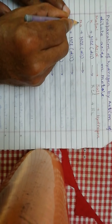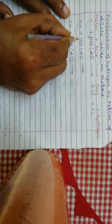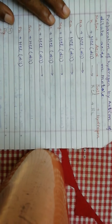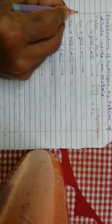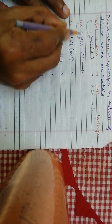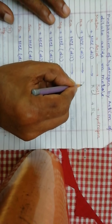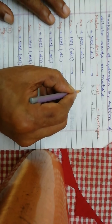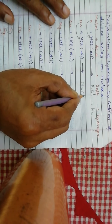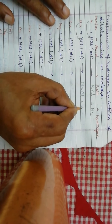When sodium reacts with hydrochloric acid, again sodium displaces hydrogen and forms sodium chloride, NaCl, plus hydrogen.